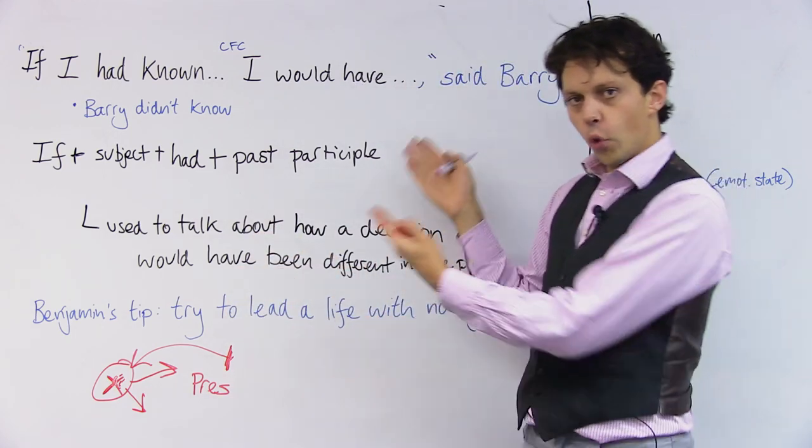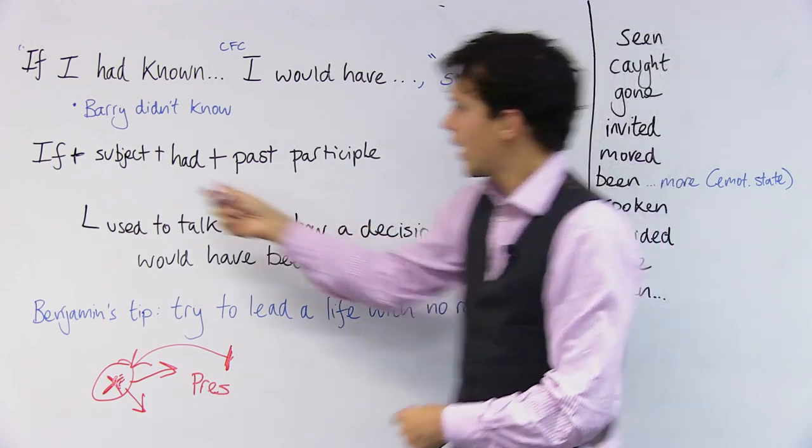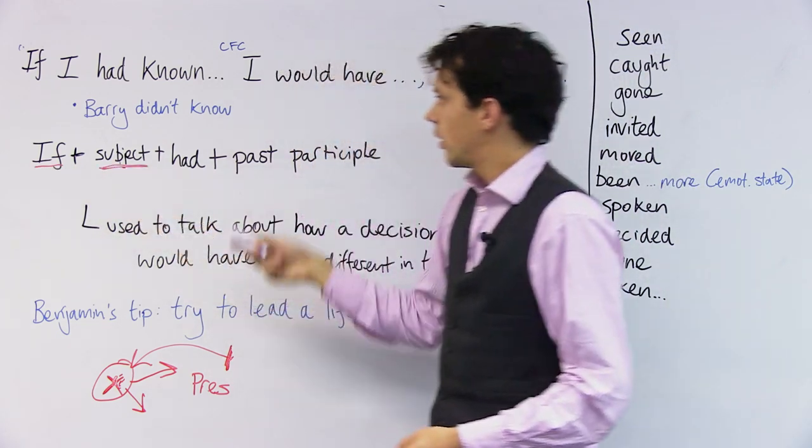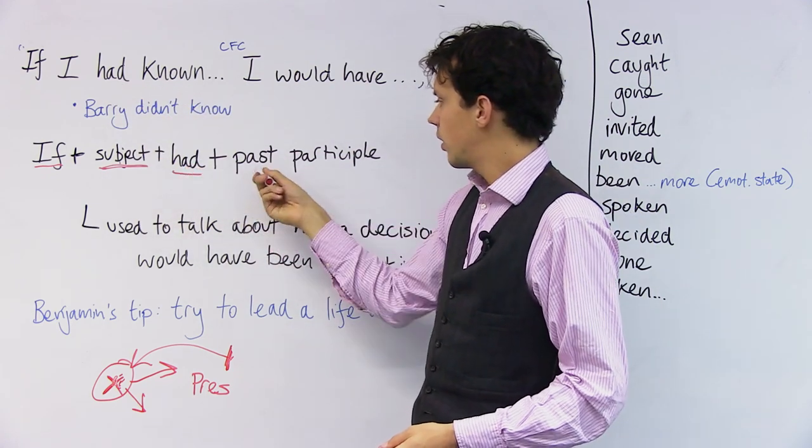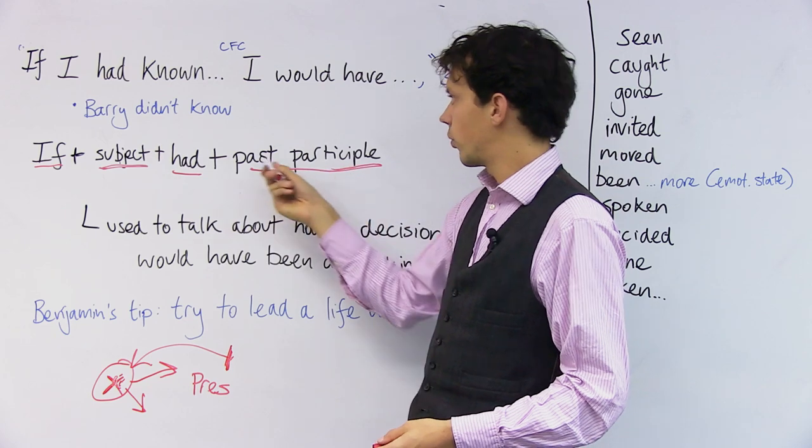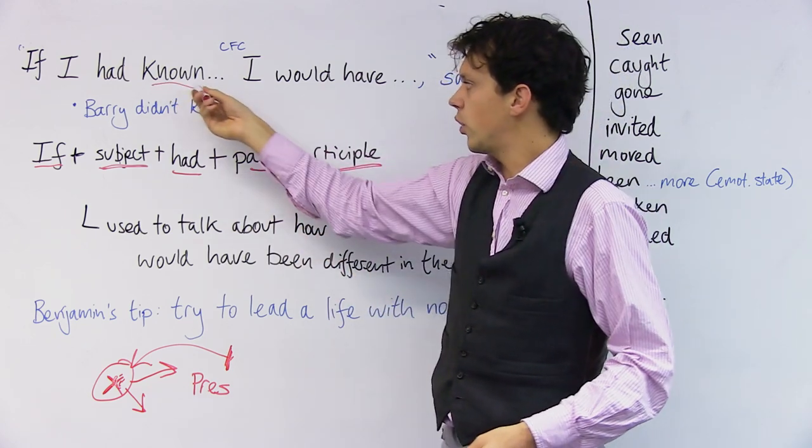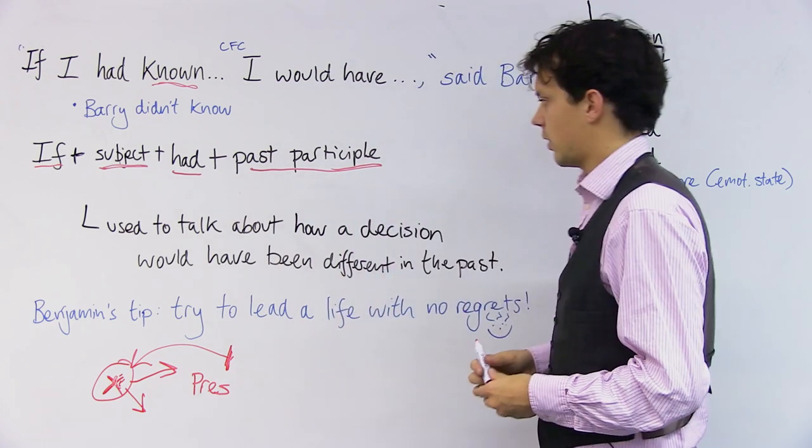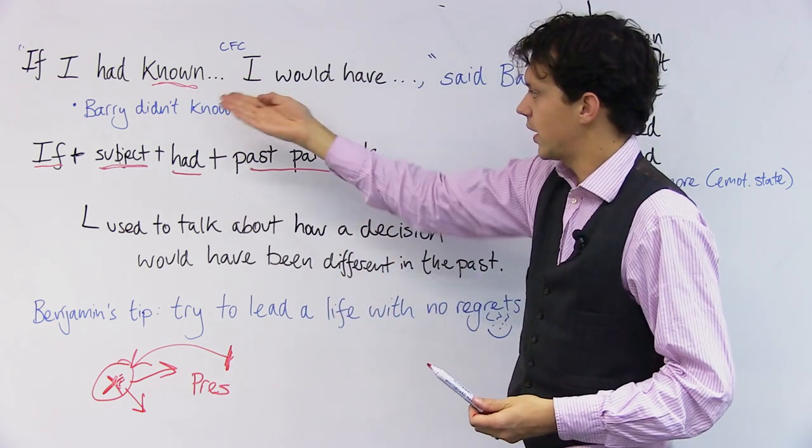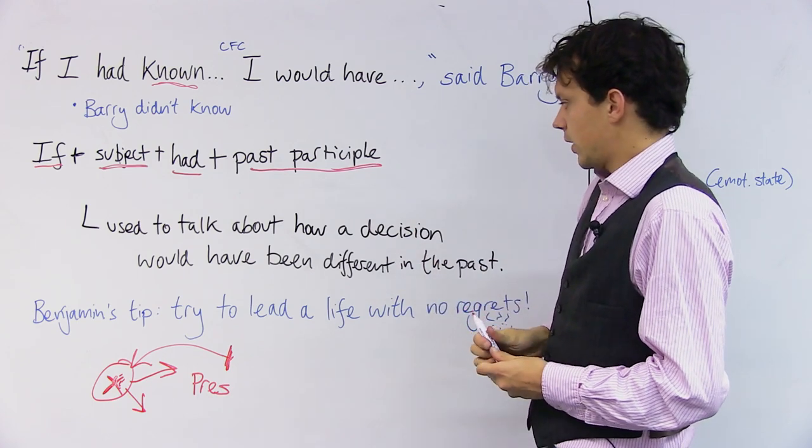Now, the form that this takes: we have if, plus our subject. In this case I, it's Barry, the subject. Had, plus past participle. Here it's known. But we can use lots of other past participles with this phrase, the had and then known thing.